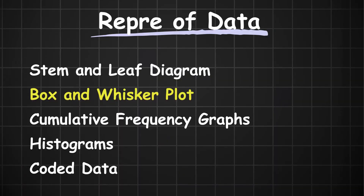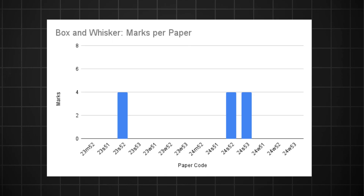Your other two representations are the box and whisker plot and histograms. The box and whisker plot rarely comes, but I get the feeling it might come in combination with the stem and leaf diagram question in this June series. As for the histogram, it hasn't showed up in the last five papers, so this is also a good chance for them to bring it back. Just make sure you're comfortable with all four representations of data because it really could be any of them. The other question that could come up under this topic is your coded data question, but it rarely comes.